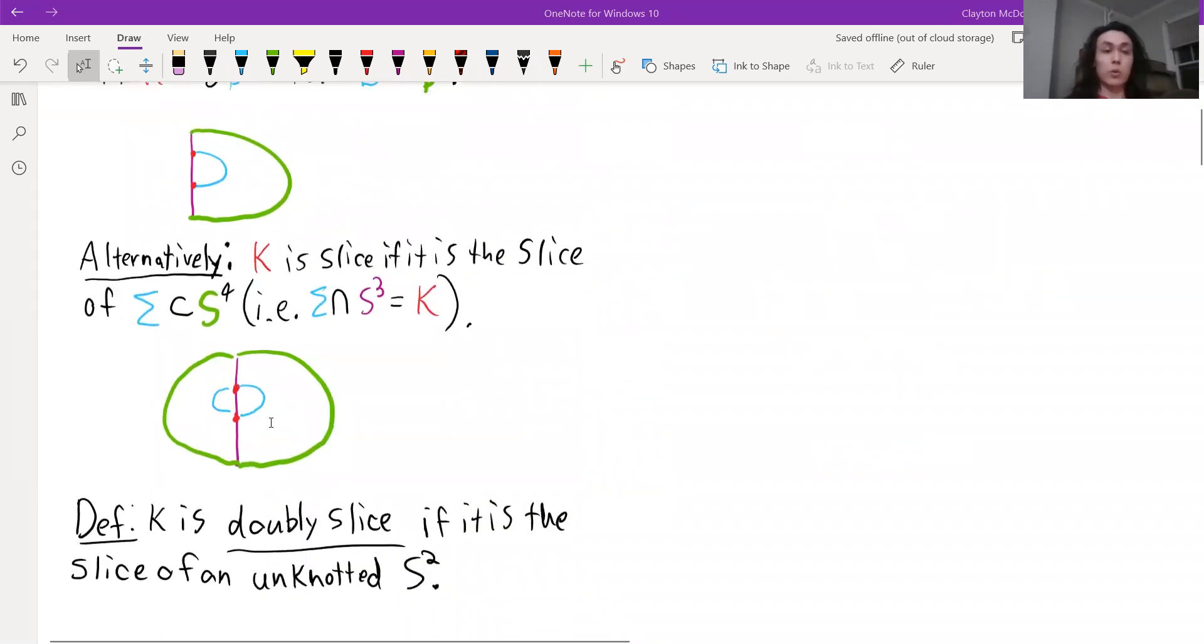The reason that I'm presenting this alternative definition is because we can talk about a knot being doubly slice if it is the cross section of instead an unknotted S2.